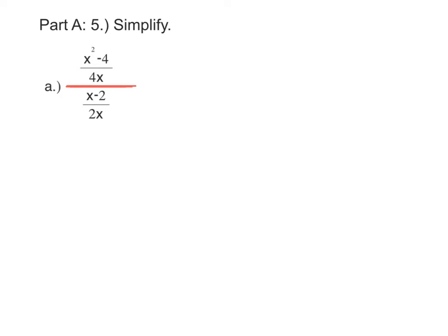Because I have a fraction in the numerator and a fraction in the denominator, we can look at this as being x squared minus 4 over 4x divided by x minus 2 over 2x. A fraction is division, so I'm just going to write this complex fraction as a division problem.